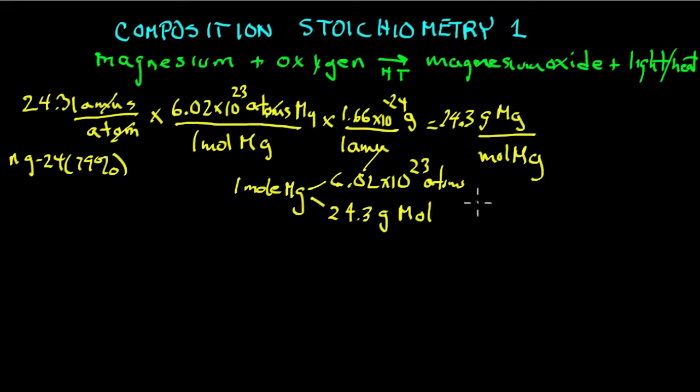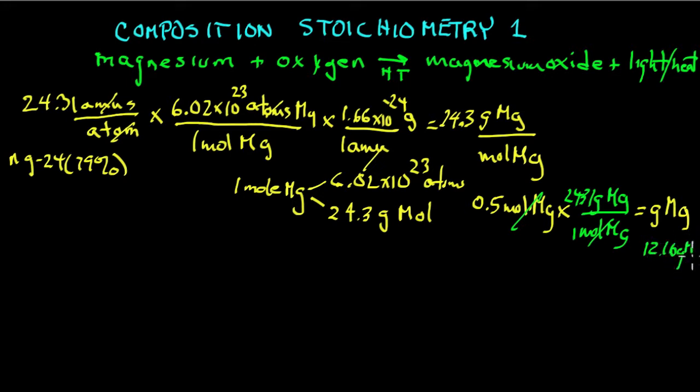So if you have 0.5 moles of magnesium and you want to know how many grams that is - see how I'm setting up? This is what you have, this is the unknown. You multiply it by a conversion factor. You put what you want to get rid of in the denominator - moles of magnesium, it's gone - and you put what you want in the numerator, grams of magnesium. One mole was 24.31, so bingo, 12.15 grams of magnesium. You can work backwards. You can start with...